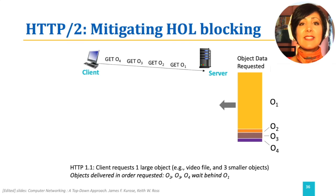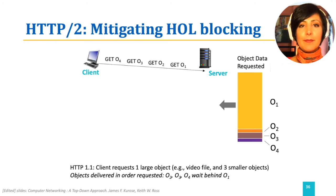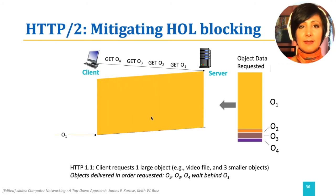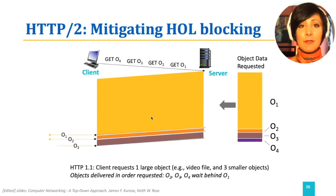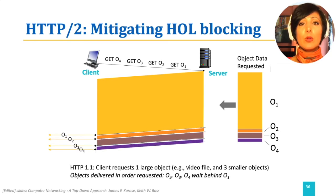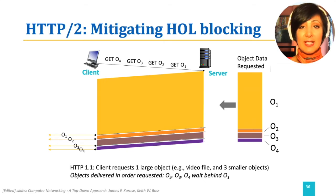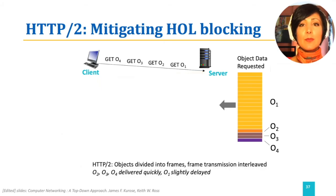Assume the client has requested four objects: O1, O2, O3, and O4. O1 is a large object, and if we send objects in first-come-first-served order, as HTTP 1.1 does, all of O2, O3, and O4 will be delayed significantly while waiting for O1 transmission.